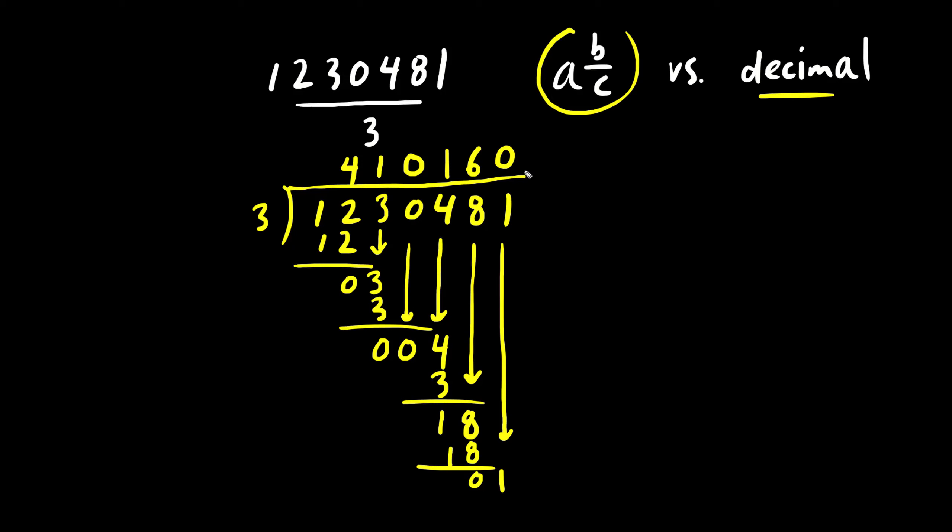So at this point, we reach the end. This giant number here, we could put a decimal here. Or we can forget about the decimal and focus on this last number, which we call the remainder. So this top part here is called the quotient. The answer to the question is 410160. And we could put a plus sign if we want to. The remainder, which is one, over the divisor, which is three. So this here is this mixed fraction answer.